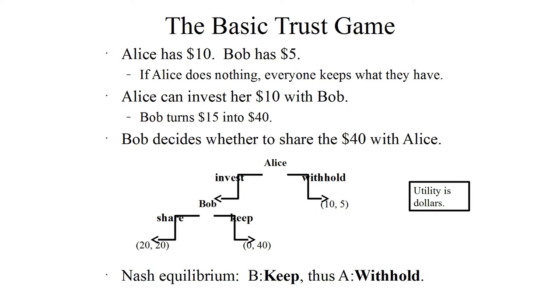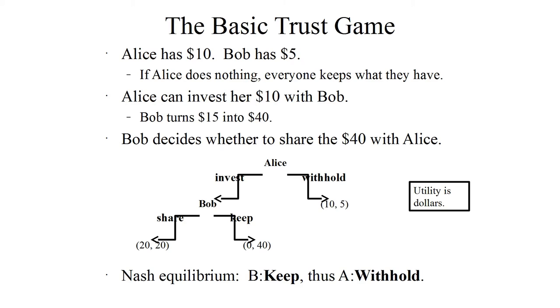So the interesting thing about the tragedy of the commons is that it's a real world problem. So clean air, clean water, fishing limits, climate change and so forth are all examples of the tragedy of the commons in the real world. So the point of this is to show that a much simpler game called the prisoner's dilemma, which again you're probably familiar with, actually scales up to real live problems in the world.